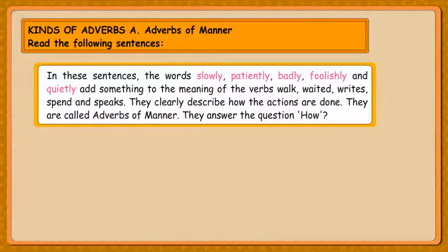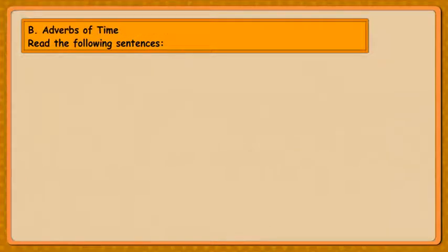In these sentences, the words slowly, patiently, badly, foolishly and quietly add something to the meaning of the verbs walk, waited, write, spend and speaks. They clearly describe how the actions are done. They are called Adverbs of Manner. They answer the question: How?